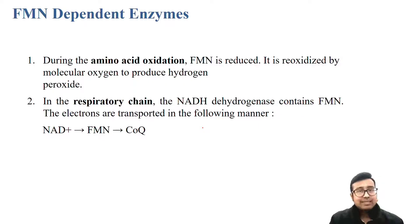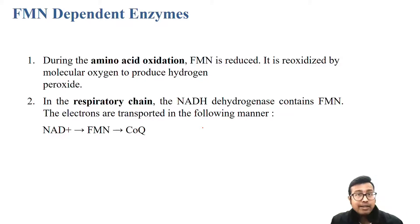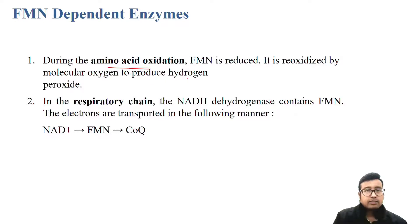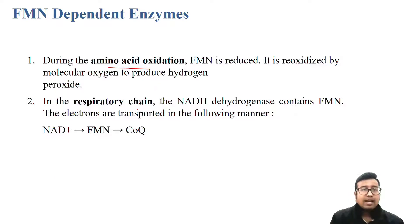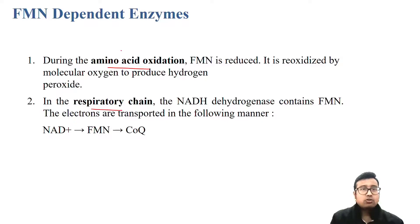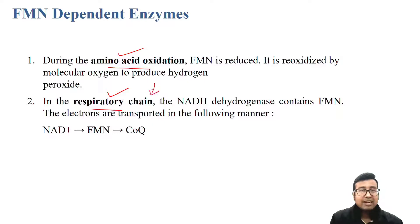So FAD, riboflavin, FMN — these are all coenzymes. The enzymes dependent on riboflavin include amino acid oxidation, where FMN is reduced, and also respiratory chain complex one. These two are very important. If you are allowed to name only one, always say respiratory chain, electron transport chain, complex one — that is the most important use of FMN.